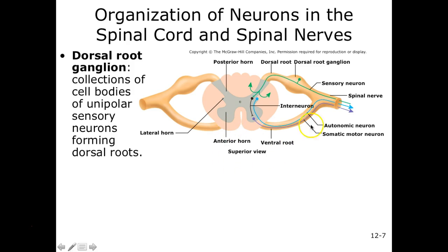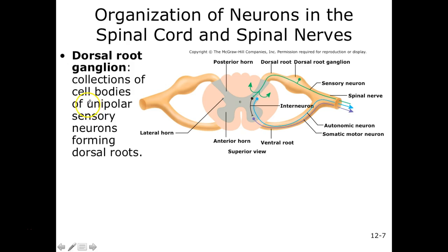Now let's touch on our dorsal root ganglion again. We said that our dorsal root contains a sensory neuron. Within our dorsal root ganglion we're going to have cell bodies — and of course, because we only have sensory neurons in here, this means our dorsal root ganglion has sensory cell bodies, or cell bodies of sensory neurons. So only sensory information enters the dorsal portion of the spinal cord.